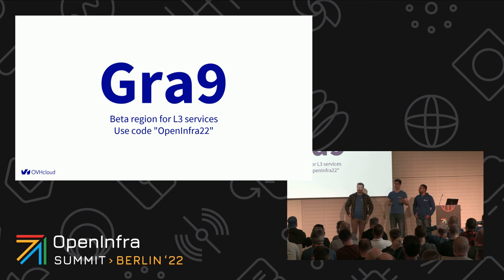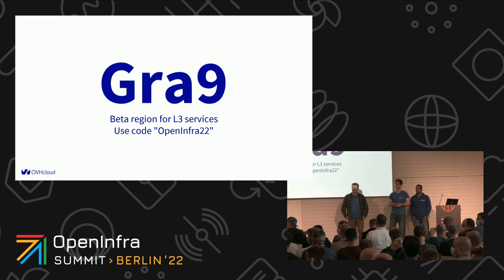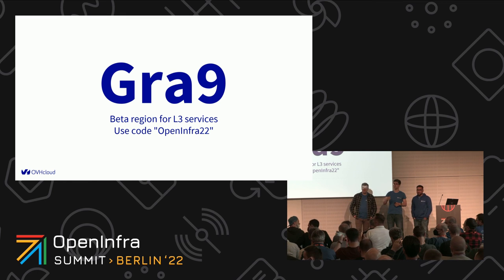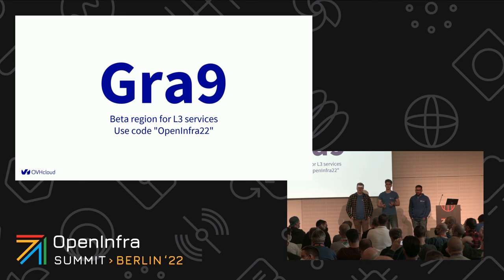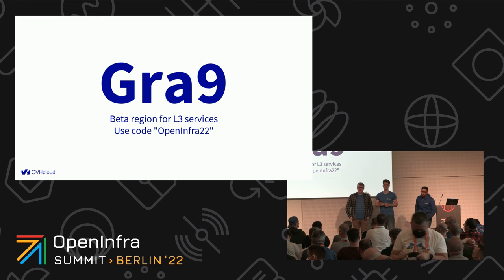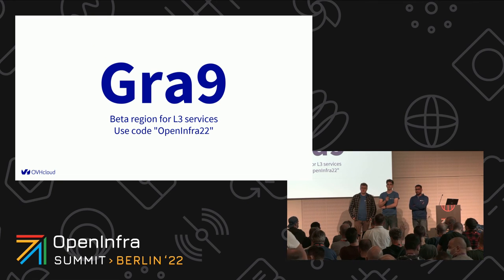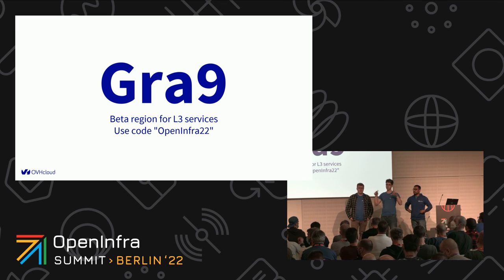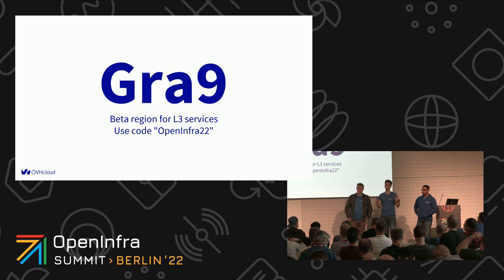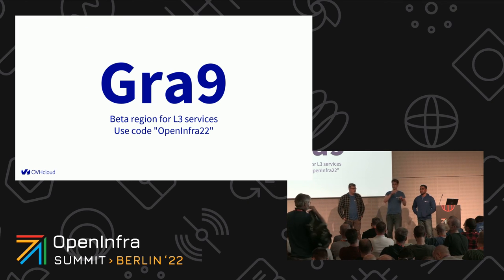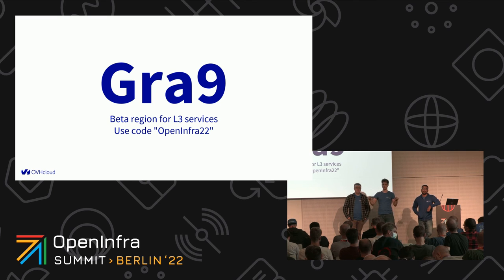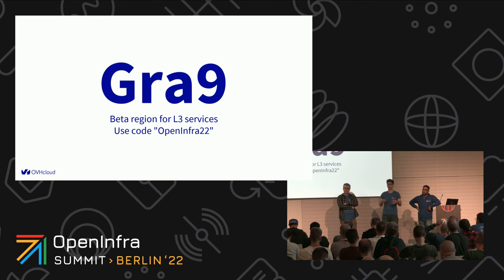Q&A: A question was asked about how VRack works — whether it utilizes internet connection or an internal network. The answer is that VRack relies on OVH's internal network. We have tunnels between data centers, so everything goes via those tunnels and via OVH's own networking infrastructure and cables.